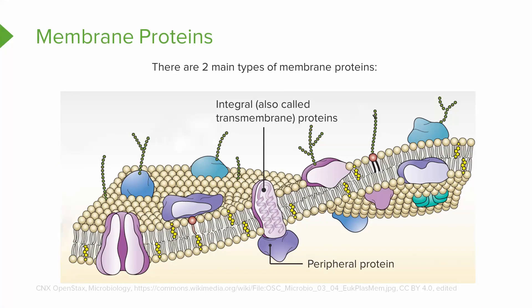You have integral membrane proteins, which are going to traverse between the outer and inner leaflet of the plasma membrane and go through or integrate into the membrane. And then you have peripheral proteins, which sit either on the inner or the outer leaflet of the cell.